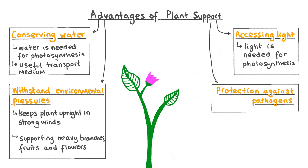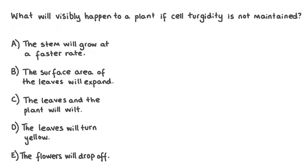Let's apply our knowledge to a practice question: What will visibly happen to a plant if cell turgidity is not maintained? A. The stem will grow at a faster rate. B. The surface area of the leaves will expand. C. The leaves and the plant will wilt. D. The leaves will turn yellow. Or E. The flowers will drop off.